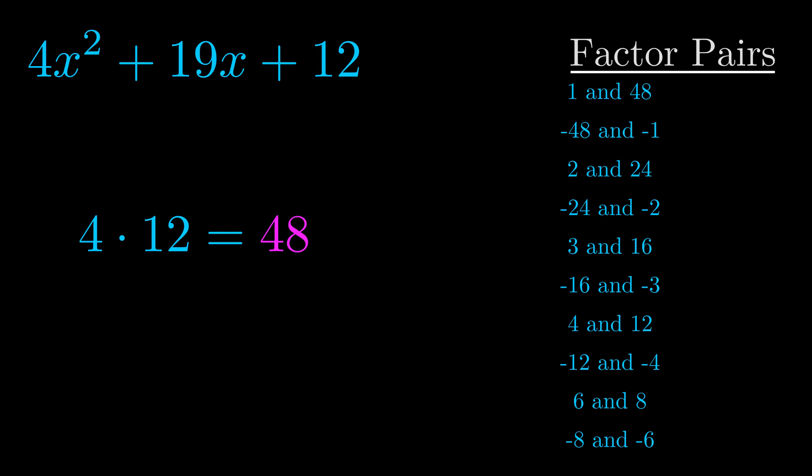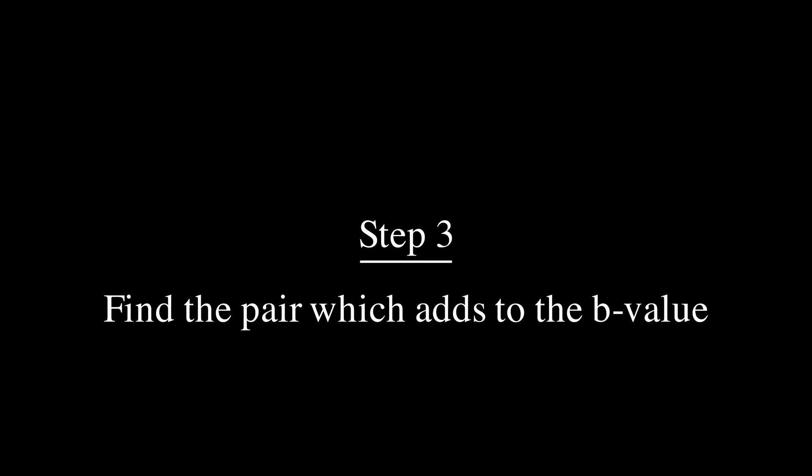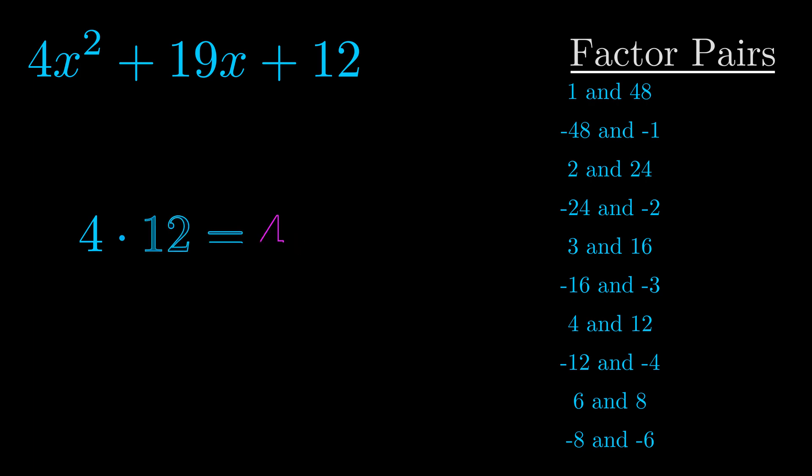Now once you have these factor pairs the goal is to find which of these pairs adds to the b value. The b value is the coefficient on the x term. That's the middle term, the one that we haven't done anything with yet. And really this is the only factor pair that we need.